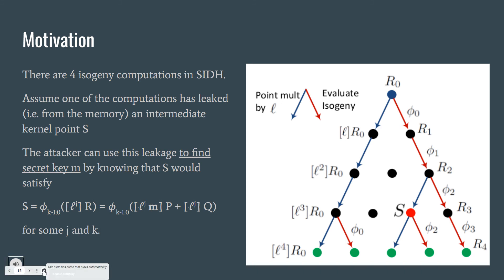The motivation. As we explained before, there are four isogeny computations in SIDH. In this attack, we assume that one of the computations is leaked, let's say from the memory, an intermediate kernel point S. Now the attacker can use this leakage to find the secret key m by knowing that S satisfies the following equation for some j and k.